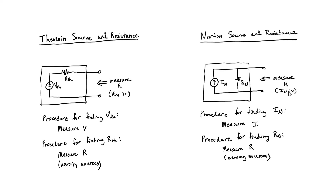Let's now find the Norton equivalent resistance of our Thevenin equivalent circuit. The procedure is the same, so it's clear that our measured resistance, or our Norton equivalent resistance, would just be equal to the Thevenin equivalent resistance. If we apply the procedure for finding our Thevenin equivalent resistance to our Norton equivalent circuit, then we find that it's just equal to our Norton equivalent resistance.